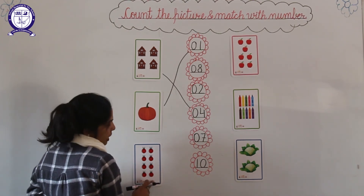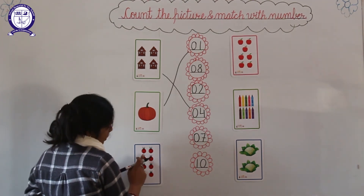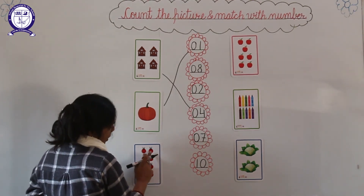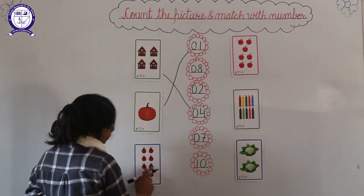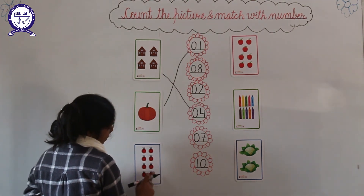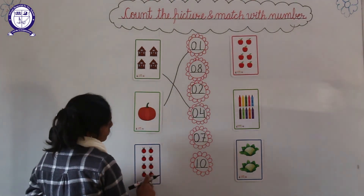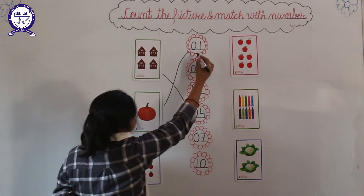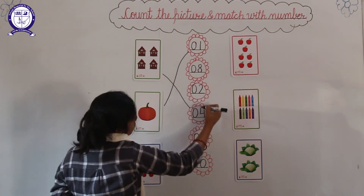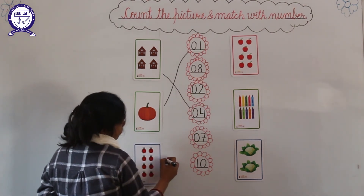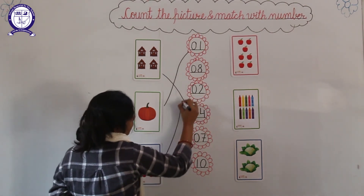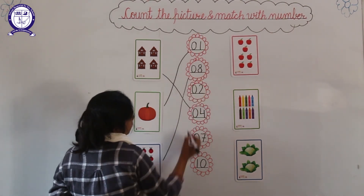And next — how many ladybirds are there? 1, 2, 3, 4, 5, 6, 7, 8. And where is 8? Here. And match with 8.